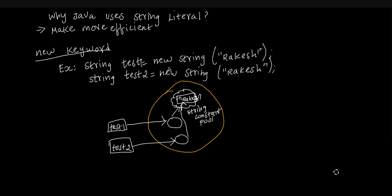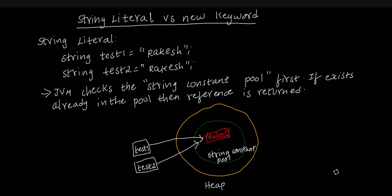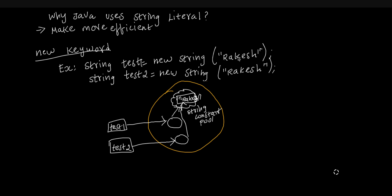String test1 equals new String 'Rakesh'. String test2 equals new String 'Rakesh'. This is the new keyword used to create objects. In the second one, the data is the same but two extra objects are created. This is an extra memory consumer and affects performance.